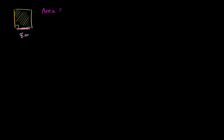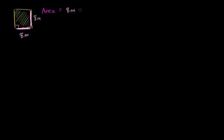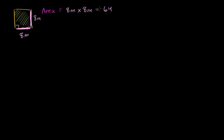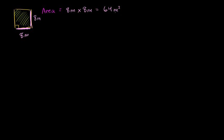It's very easy to figure out for a square. It's literally going to be your base times your height, and this is true for any rectangle. But since this is a square, your base and your height are going to be the same number. So it's going to be 8 meters times 8 meters, which equals 64. Your meters times your meters gives you 64 meters squared, or 64 square meters.